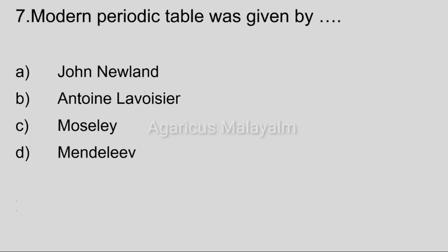Seventh question: Modern periodic table was given by dash. Option A: John Newland. Option B: Anjini Lavoisier. Option C: Moseley. Option D: Mendeleev. Correct answer: Option C, Moseley.